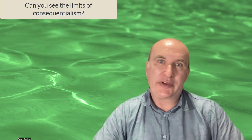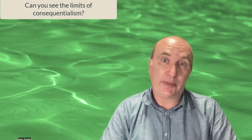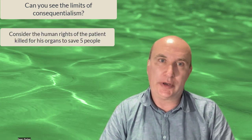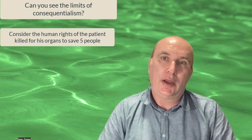Now that we've seen some of the limits of consequentialism, let's look at some more objections. You probably already thought of some of these. Firstly, it's pretty unwieldy — how is it even possible to measure what is the greatest good for the greatest number without going forward in time and surveying everybody after the fact? It's a really imprecise theory.